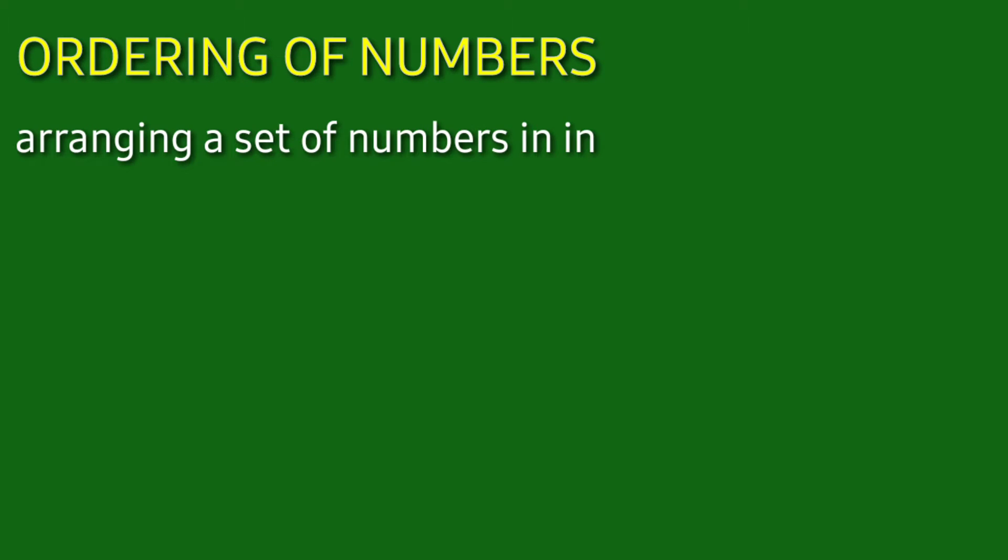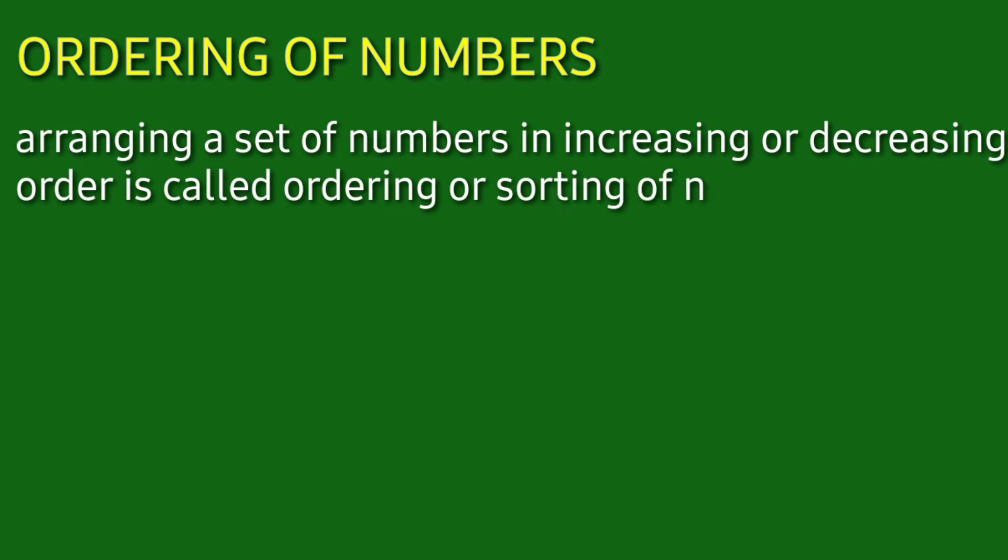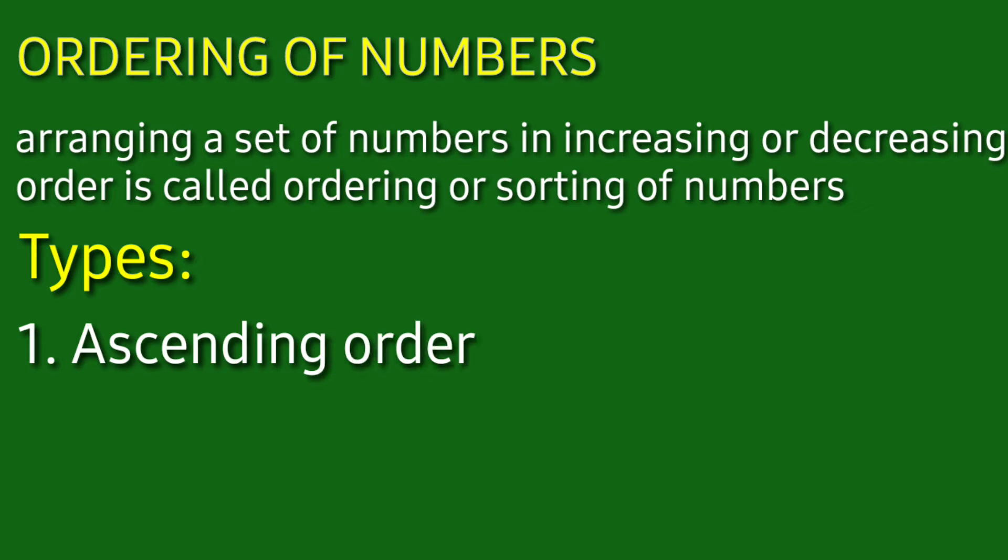Arranging a set of numbers in increasing or decreasing order is called ordering or sorting of numbers. Here are two types. One is ascending order. The second one is descending order. Ascending means small to big and descending means big to small.